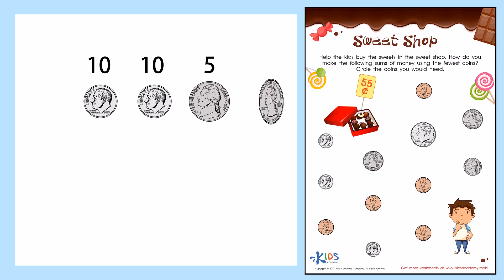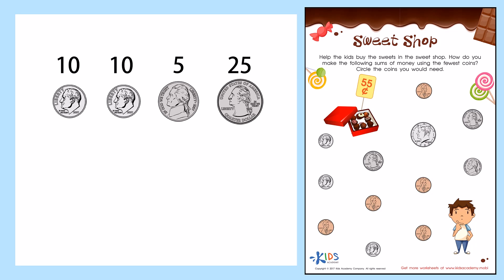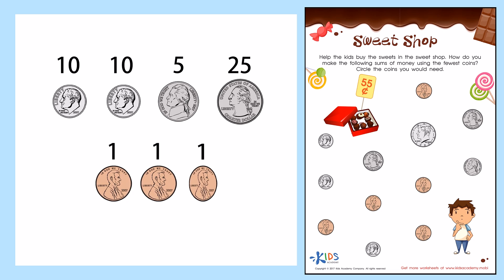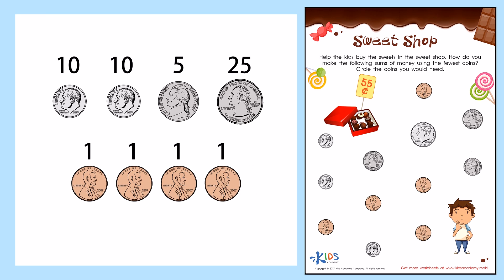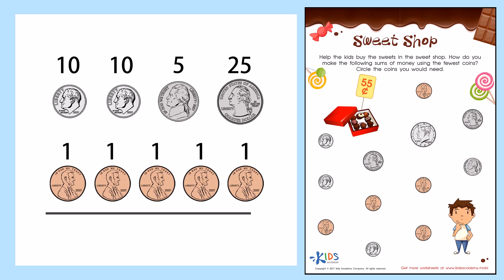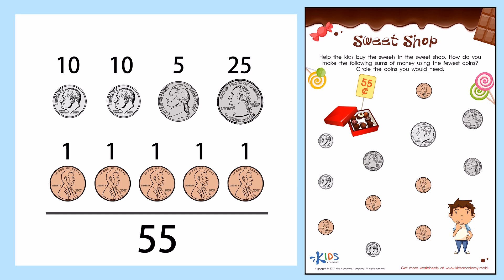Then I see a quarter, so let's do a quarter. 25 plus 25 equals 50. And I've already used my nickel, so I can't use another nickel — let's use pennies again. Pennies are each one cent, so one, two, three, four, five. Let's make sure it equals 55 cents. So we've got 10 plus 10, which is 20, plus five, which is 25. Then 25 plus another 25 is 50, and then five pennies. That equals 55 cents.